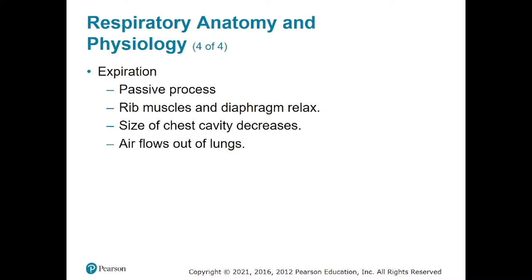The muscle of your diaphragm is going to relax, become less taut, and go back into its normal position. The muscles in between the ribs are going to relax. Especially if we're under stress or exercising, our abdominal muscles will also relax. Our chest cavity is going to become smaller, and it's going to help bring that air back out — allowing air to gradually recede and go out of our lungs in a very energy-efficient way.